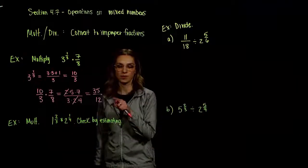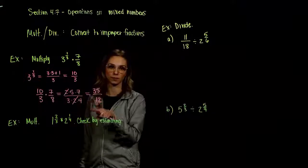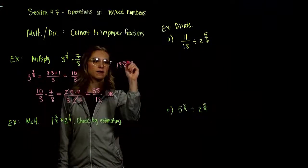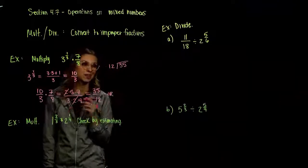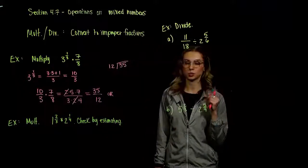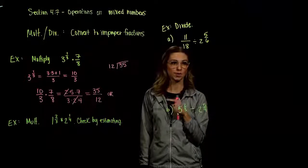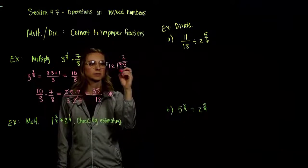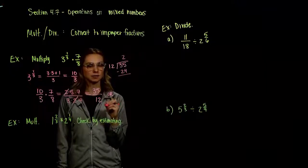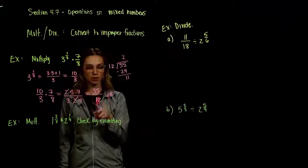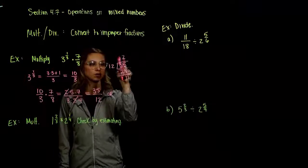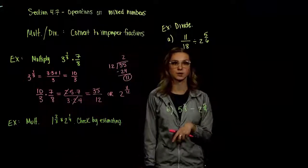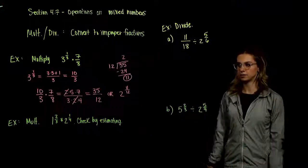We could also write thirty-five twelfths back into a mixed number. To convert back to mixed, we're dividing thirty-five by twelve and asking how many times it fits without going over. Twelve times two is twenty-four, which still fits; twelve times three is thirty-six, which is too large. So it goes in twice, and two times twelve is twenty-four, giving a difference of eleven. So thirty-five twelfths is two and eleven-twelfths. Our first step is to convert to improper fractions, and in the end we can always convert back to mixed.